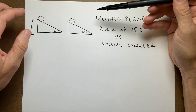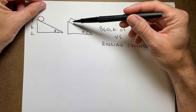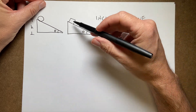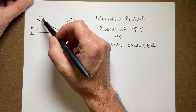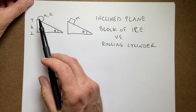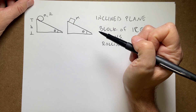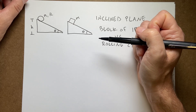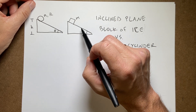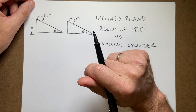Here we have a classic problem with two cases. There's a block sliding down a frictionless plane with height h and angle theta. Over here is a cylinder with mass m and radius r that's going to roll down the incline — same mass, same height. The question is which one gets to the bottom first. I'm going to do this two ways: first using work-energy to calculate the speed and acceleration at the bottom, then again using forces and torque.